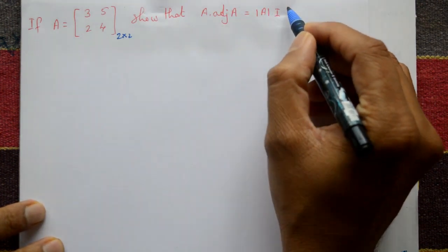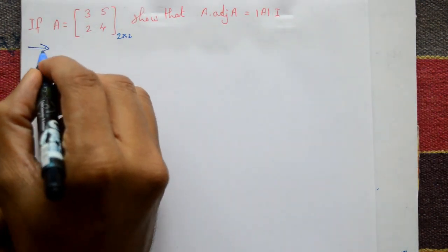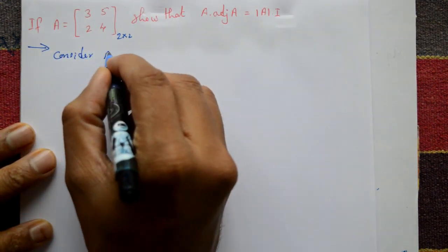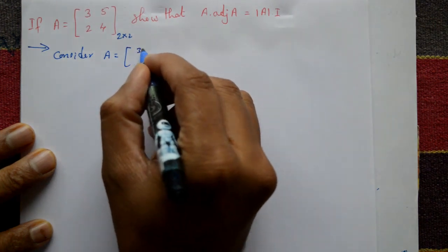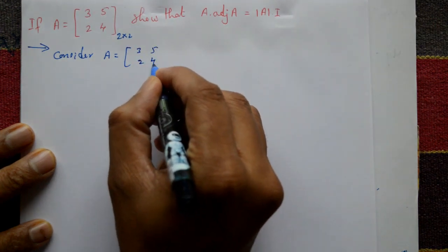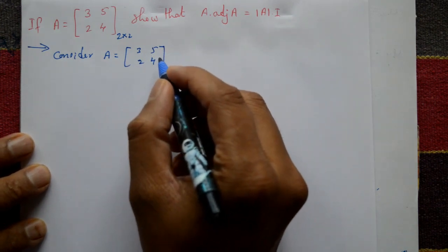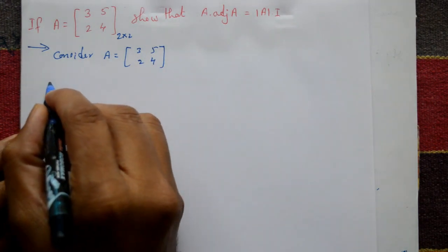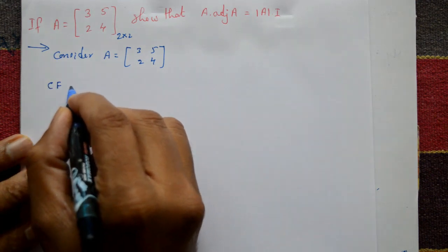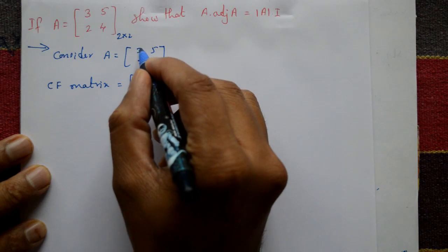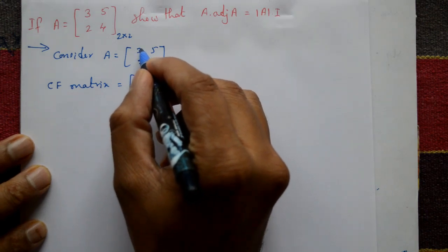Consider given matrix A is equal to 3 5 2 4. Now find the cofactor of matrix. Cofactor of matrix is: cofactor of 3 is 4, first element.